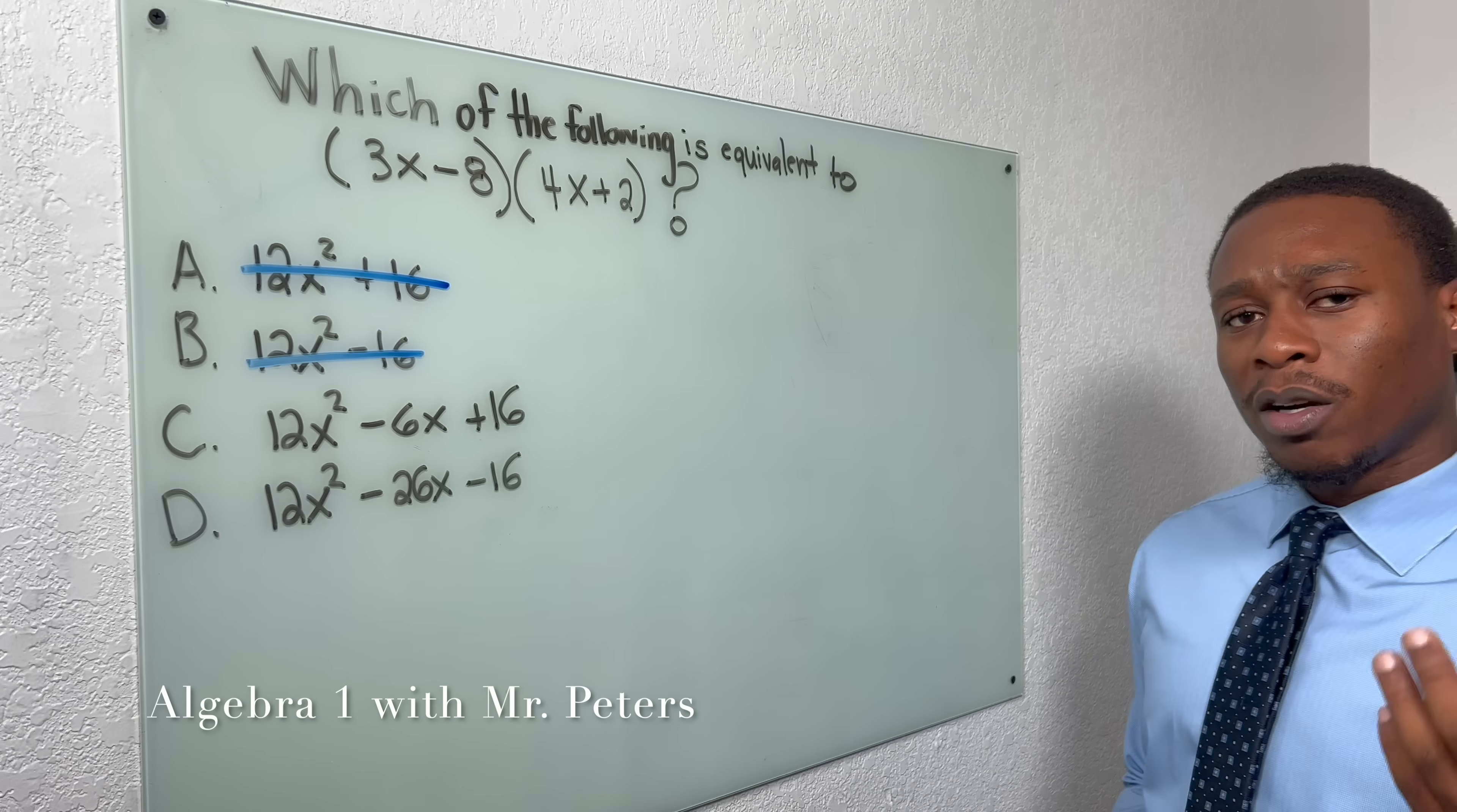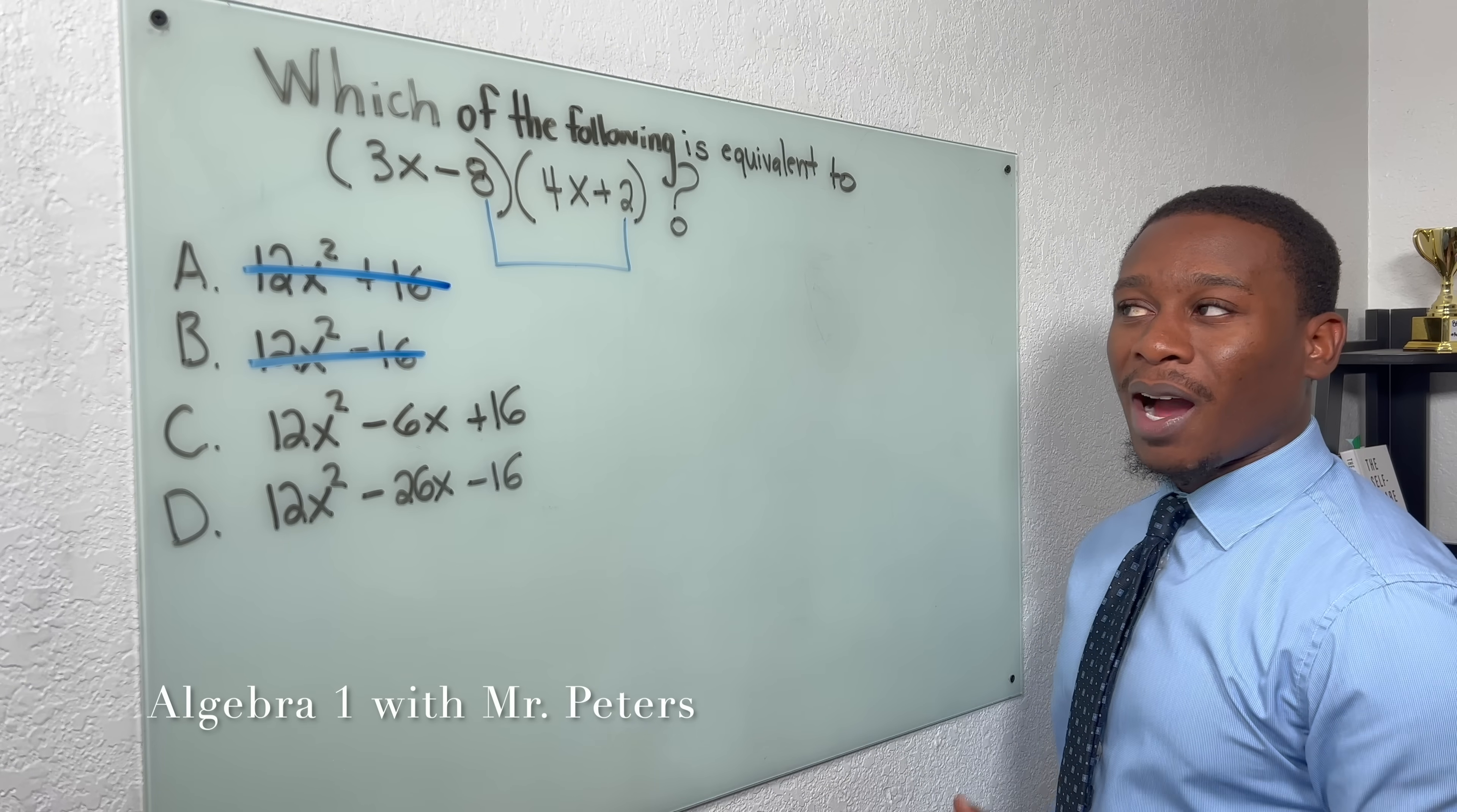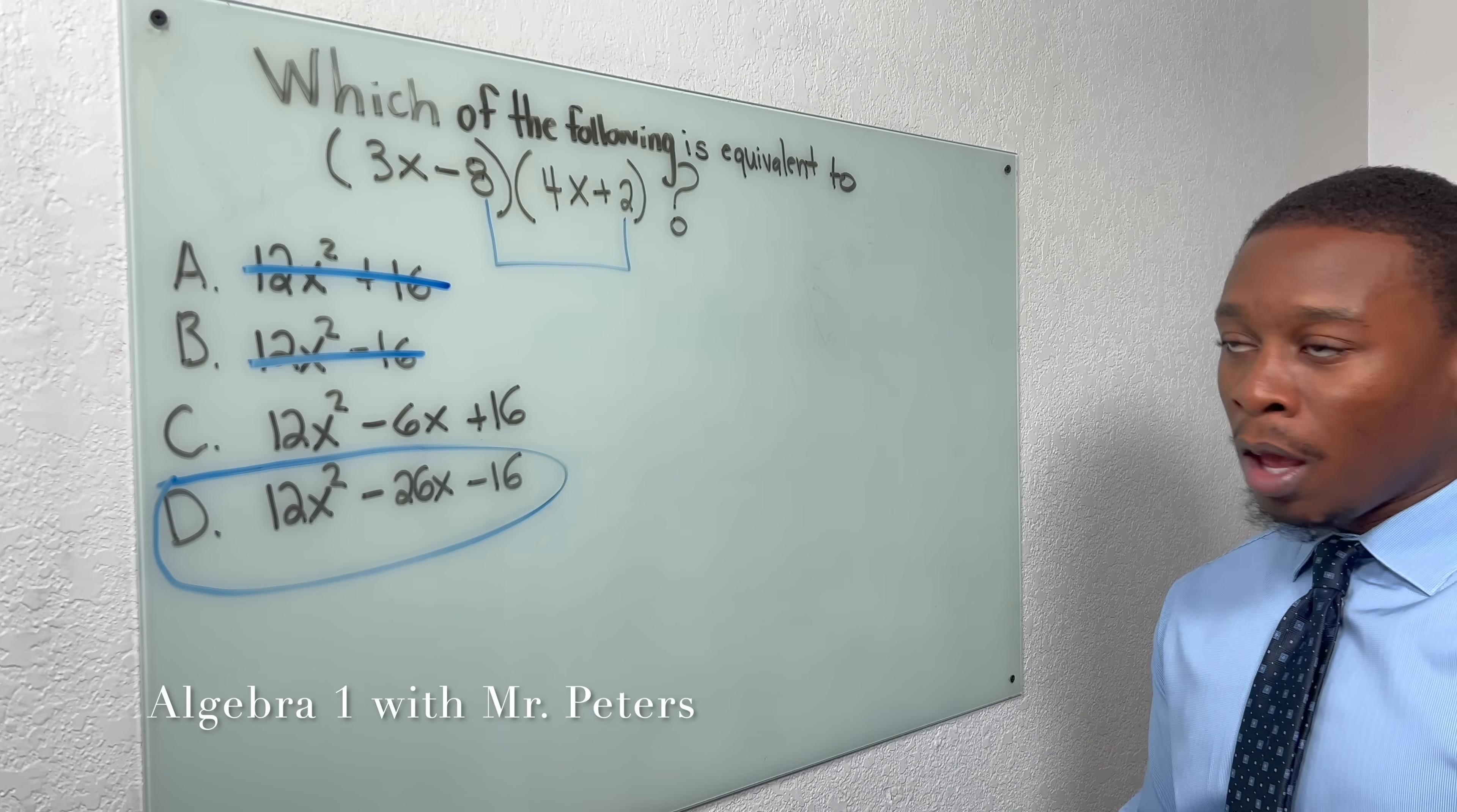Now, I'm starting to pay attention to my signs, because I notice that 16, one's positive, one's negative. But when I multiply my constant, I know that that last term is going to be a negative 16, so our answer should be D.